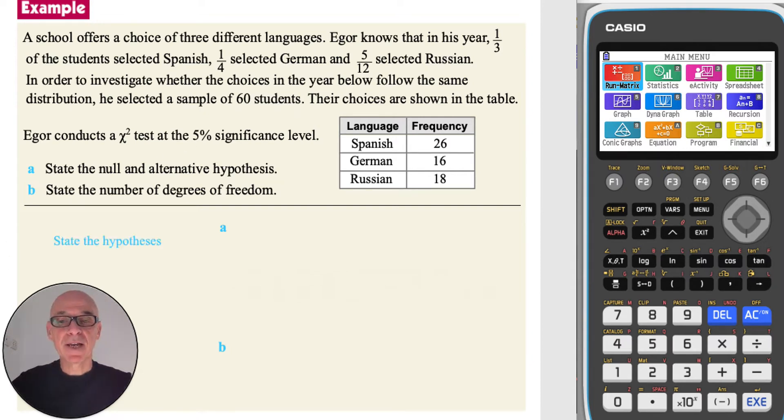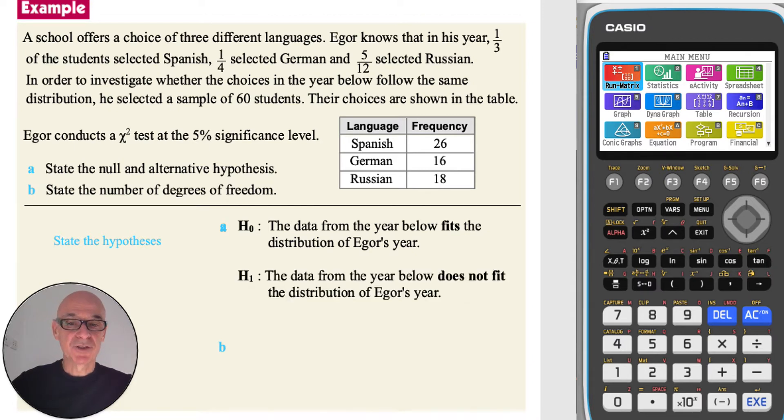In part A, we're asked to state the null and alternative hypotheses. The null hypothesis H₀ is that the data from the year below fits the distribution of Igor's year. And the alternative hypothesis H₁ is that the data from the year below does not fit the distribution of Igor's year.